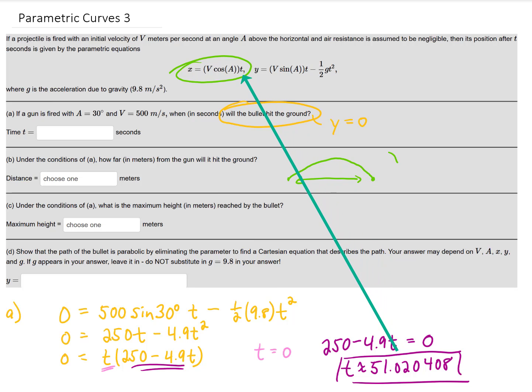So all we need to do to get this answer is we need to plug in v equals 500, a equals 30, and t equals 51.0204 and so on. If we do that I'm getting approximately 22,092.4848 meters from where we started. Alright so I'm going to box that up and move on to the next one.